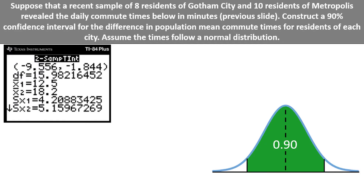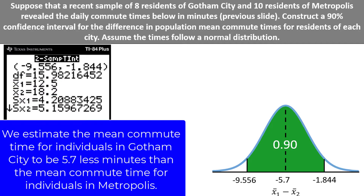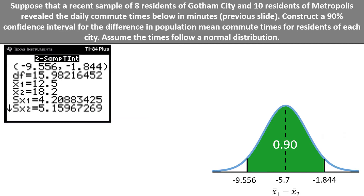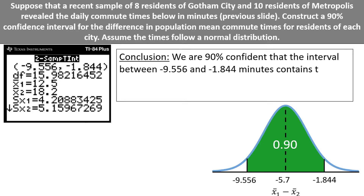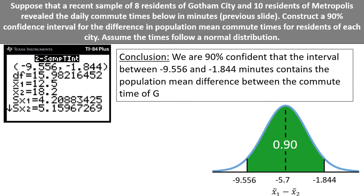We can graph the confidence interval. We have negative 9.556 on the left and negative 1.844 on the right. Our point estimate is 12.5 minus 18.2, which is negative 5.7. The interpretation of the point estimate is that we estimate the mean commute time for individuals in Gotham City to be 5.7 fewer minutes than it is for individuals in Metropolis. We are 90% confident that the interval between negative 9.556 and negative 1.844 minutes contains the population mean difference between the commute time of Gotham City and Metropolis residents.